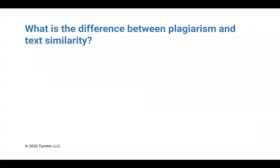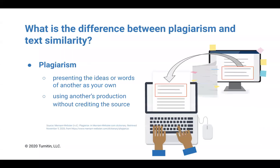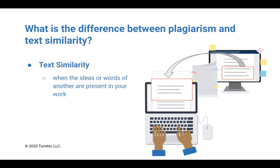What is the difference between plagiarism and text similarity? Plagiarism is when someone uses the ideas or words of someone else and presents them as their own, or they use another's ideas or words and do not give proper credit to the author. Text similarity, on the other hand, is when the ideas or words of someone else are simply present in one's work, even when they are quoted and cited properly.